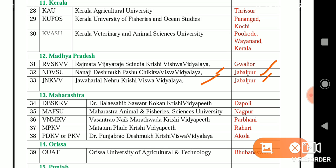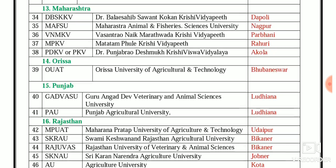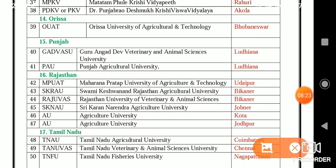In Maharashtra, five SAUs: DBSKKV — Dr. Balasaheb Sawant Konkan Krishi Vidyapeeth, Dapoli; MAFSU — Maharashtra Animal and Fisheries Science University, Nagpur; VNMKV — Vasantrao Naik Marathwada Krishi Vidyapeeth, Parbhani; MPKV — Mahatma Phule Krishi Vidyapeeth, Rahuri; and PDKV — Dr. Panjabrao Deshmukh Krishi Vishwa Vidyalaya, Akola. In Odisha, one SAU: OUAT — Odisha University of Agriculture and Technology, Bhubaneswar.